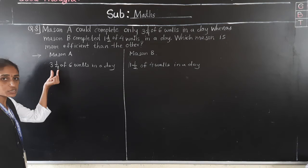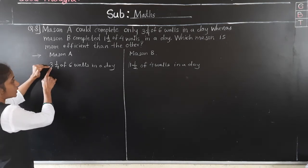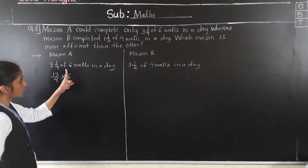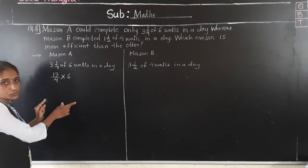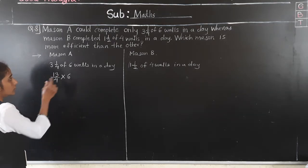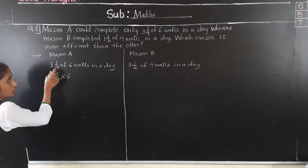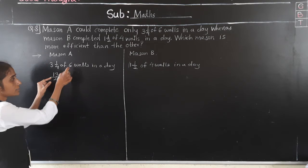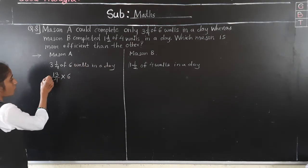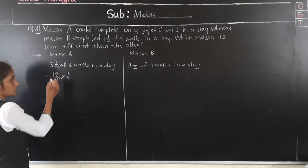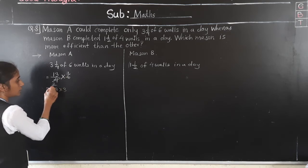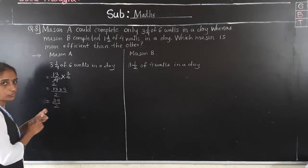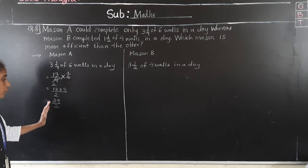For Madison A: 3 and 1/4 of 6 volts. Convert the mixed fraction 3 and 1/4 to improper fraction — 4 threes are 12, plus 1 is 13 upon 4. Multiply by 6. Cancel: 2 twos are 4, so 13 multiplied by 3 over 2, which is 39 upon 2. Madison A gets 39 upon 2.